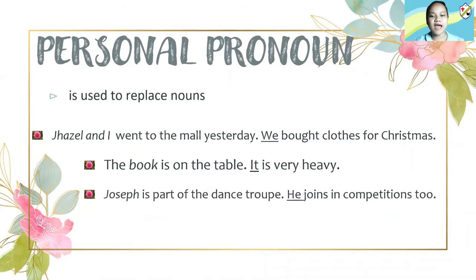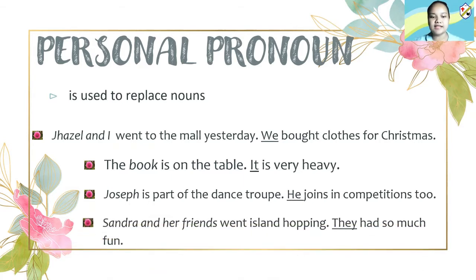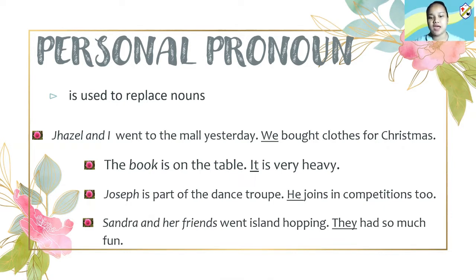Next we have: Joseph is part of the dance troupe. He joins in competitions too. So 'he' here talks about Joseph. And lastly, Sandra and her friends went island hopping. They had so much fun. Our pronoun here is 'they,' and it is talking about Sandra and her friends.